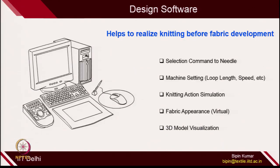This design software is actually very powerful in helping you realize the knitting action before fabric development. This is a big advancement in knitting because in real practice, whenever we make any design, we have no idea how the fabric surface will look. If you keep making different designs on the machines, you will be wasting a lot of yarn and samples during this process. So, before you make any design or pattern, if there is a mechanism through which you can realize the fabric, that will be really useful without wasting yarn on the machine.